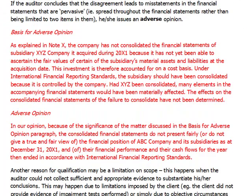Sometimes the disagreement is so big, or there are so many disagreements, that the adjustments not made by management are pervasive — not only material but pervasive. Their impact spreads throughout all the financial statements; it's not just property, plant and equipment and one item of expenses, but a number of items in the balance sheet and income statement. Then the auditor issues an adverse opinion, which says the financial statements do not present fairly or do not give a true and fair view of the financial position of the company. That's an adverse opinion — the extreme case of disagreement with management.